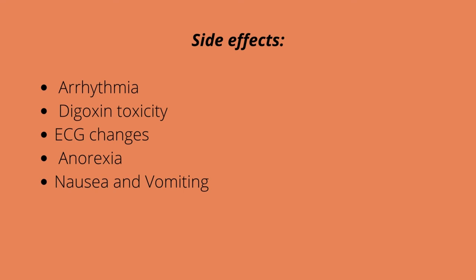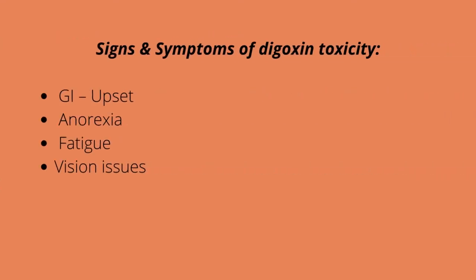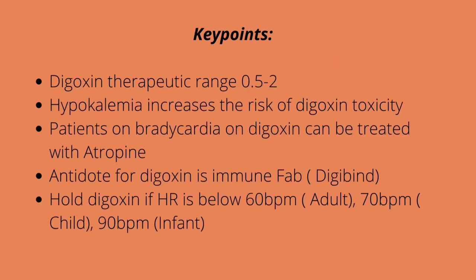Signs and symptoms of digoxin toxicity you need to know: GI upset including vomiting, anorexia, fatigue, and vision issues — the patient will tell you they see a yellow ring. Before we administer digoxin, we always take the patient's heart rate. We hold digoxin if the heart rate for an adult is below 60 beats per minute, below 70 beats per minute for a school-age child, and below 90 beats per minute for an infant. We hold it and let the medical provider know.